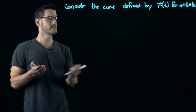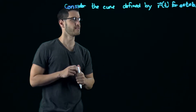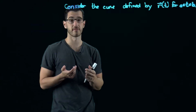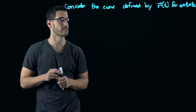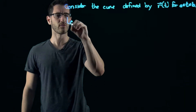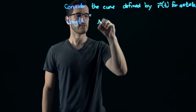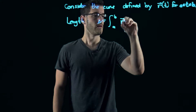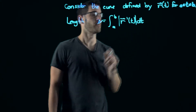Let's consider a curve described by a nice vector-valued function. We know that the curve segment is defined for t greater than or equal to a and less than or equal to b. We found already that the actual arc length is just the integral from a to b of the magnitude of r prime of t, dt.